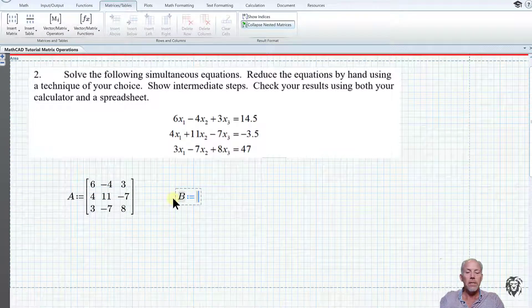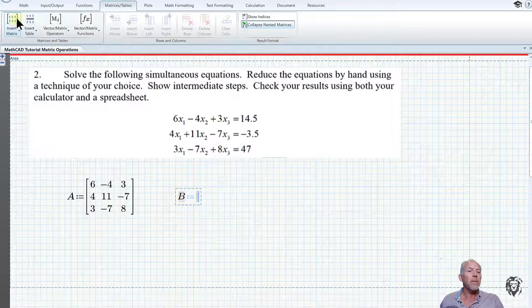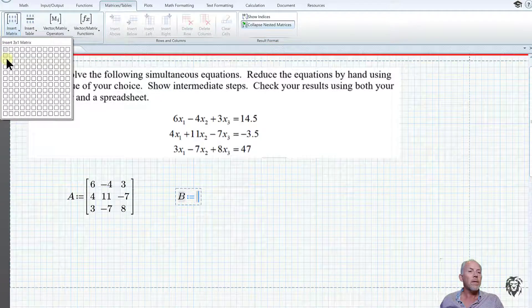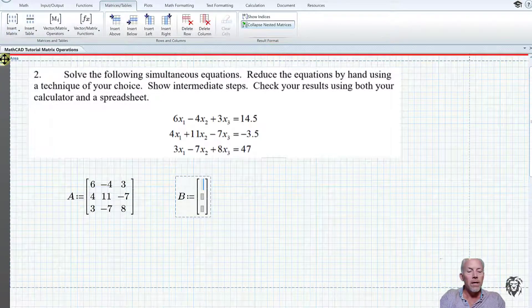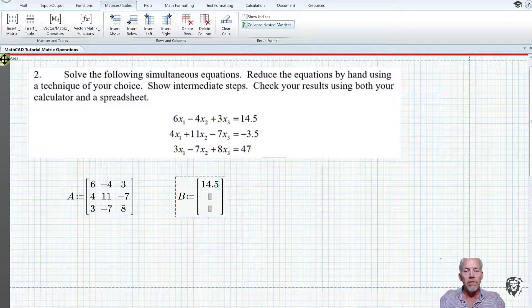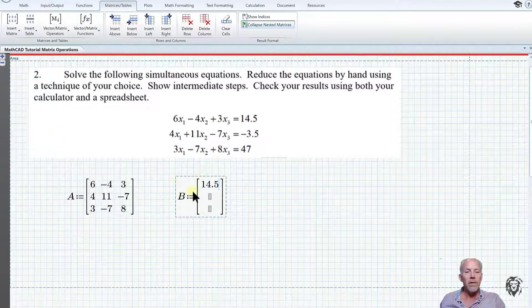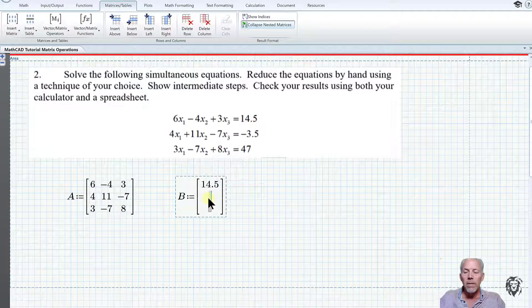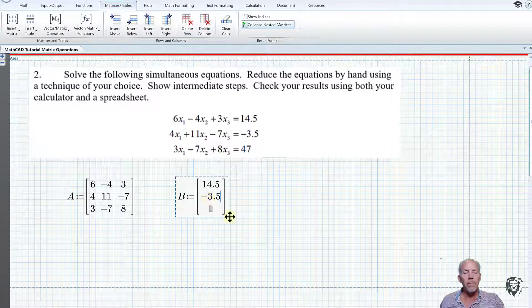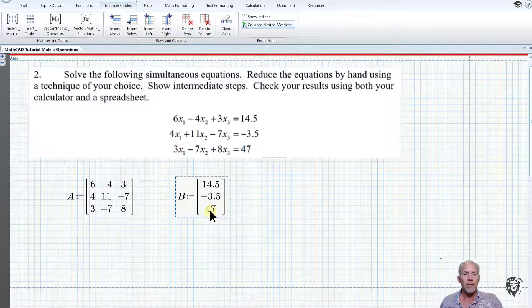Let's set up the B matrix, again it's a three by one, with values of 14.5, -3.5, and 47.